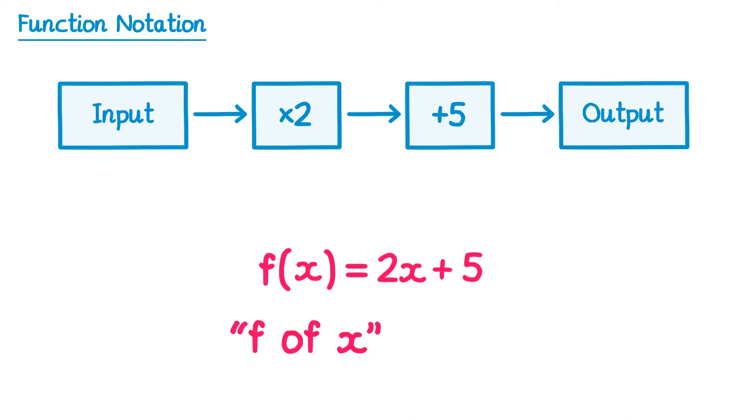If we now go back to the numerical example, where the input was 7 and the output was 19, we can write this down with function notation as well. We would write f but make the input 7 rather than x this time. The output can be generated using 2x plus 5. All we need to do is replace all of the x's with 7s. So it's 2 lots of 7 plus 5. 2 times 7 is 14 and if you add 5 you get 19, which we knew as our output.